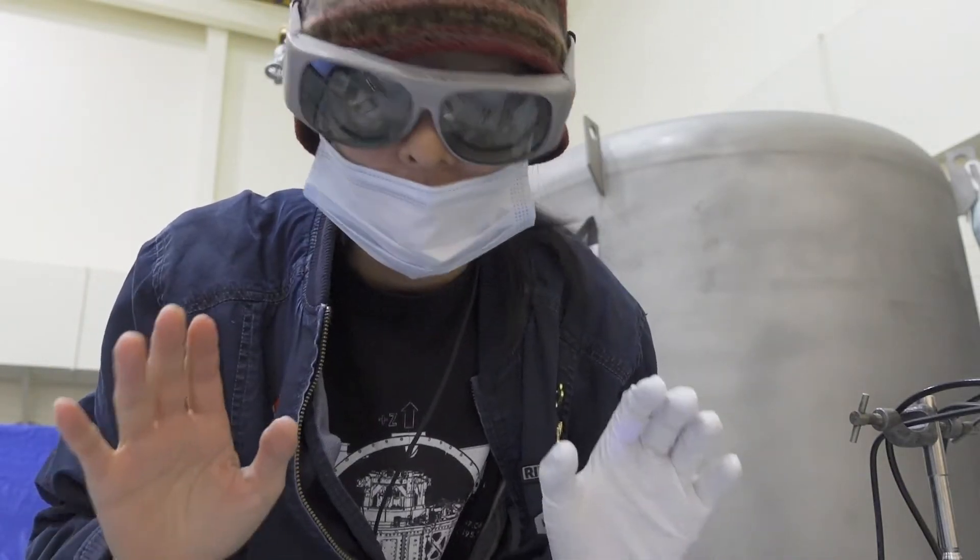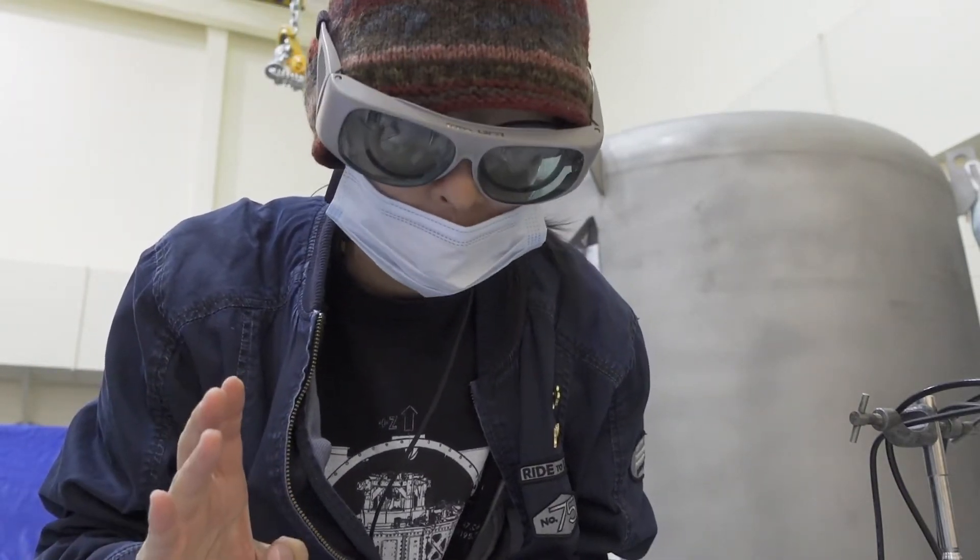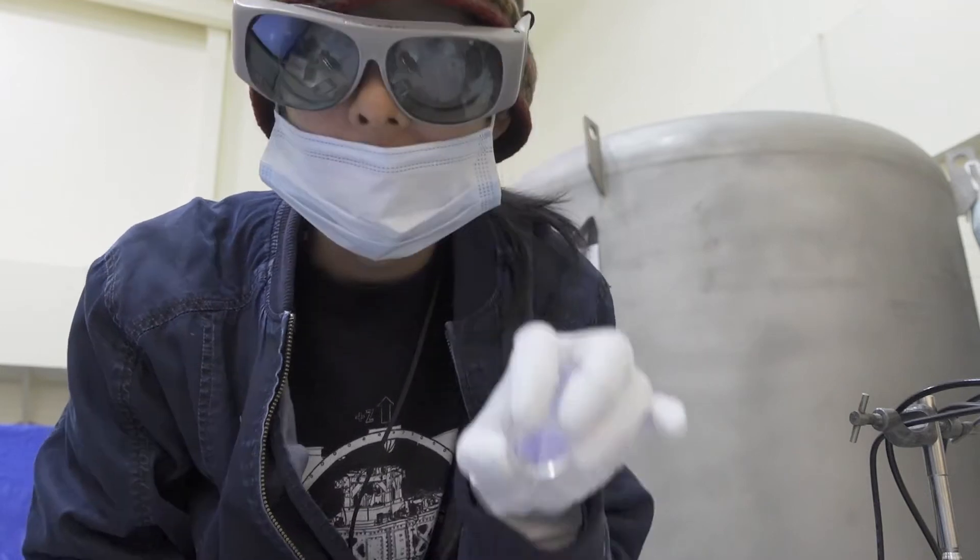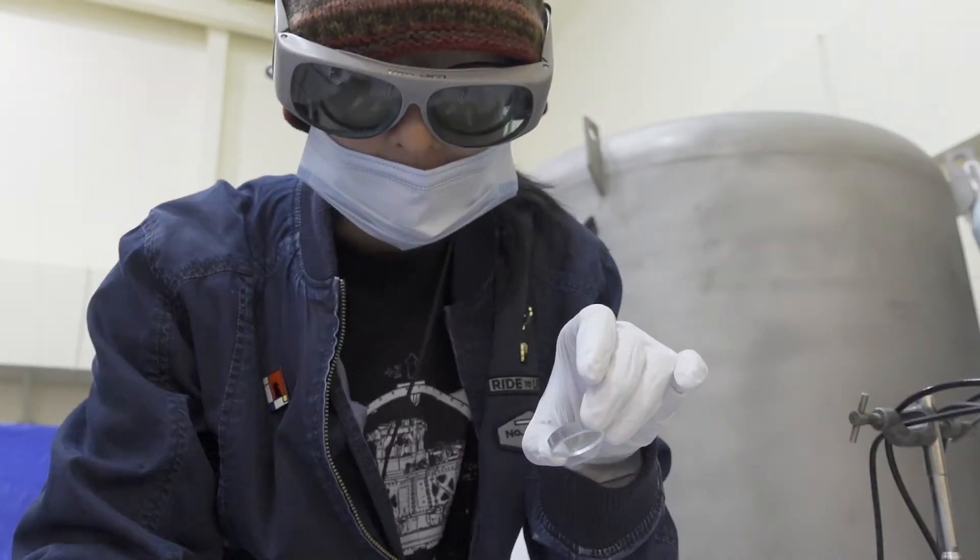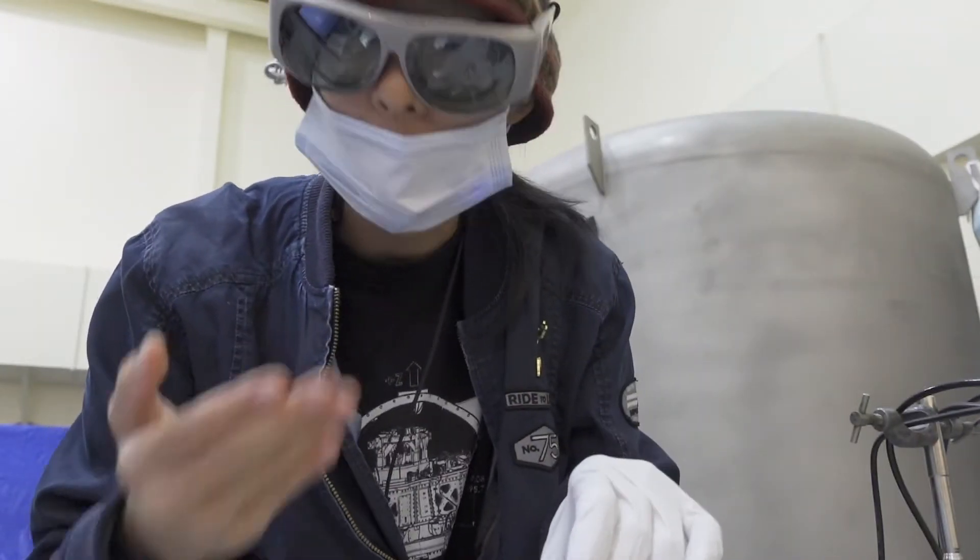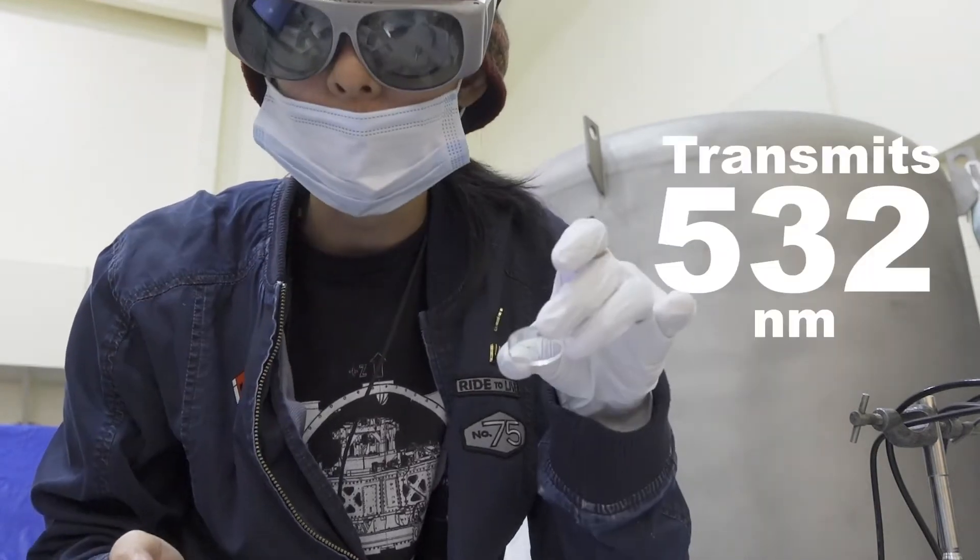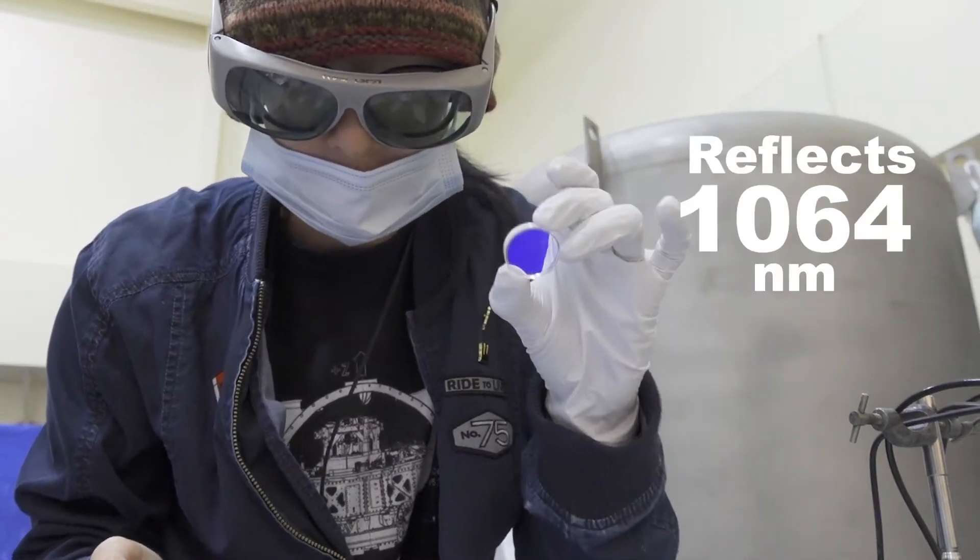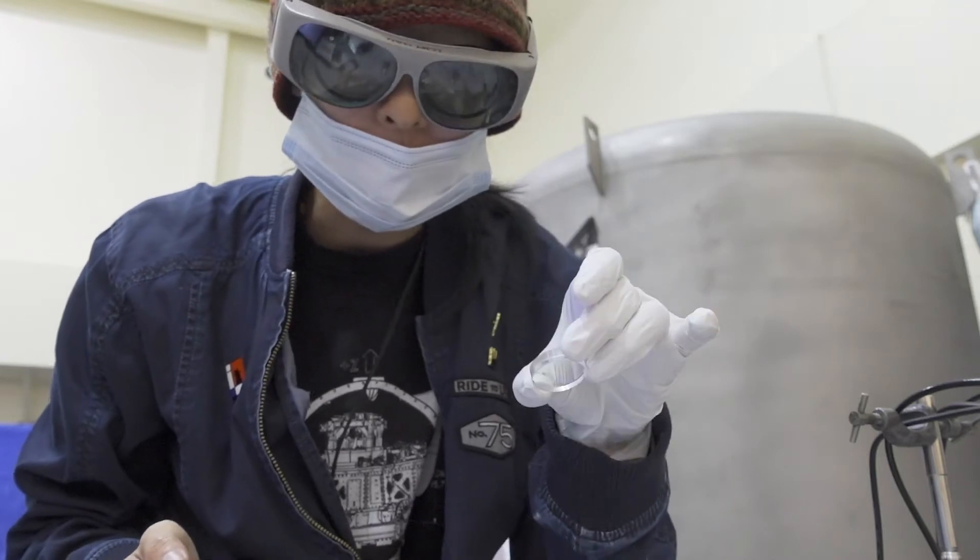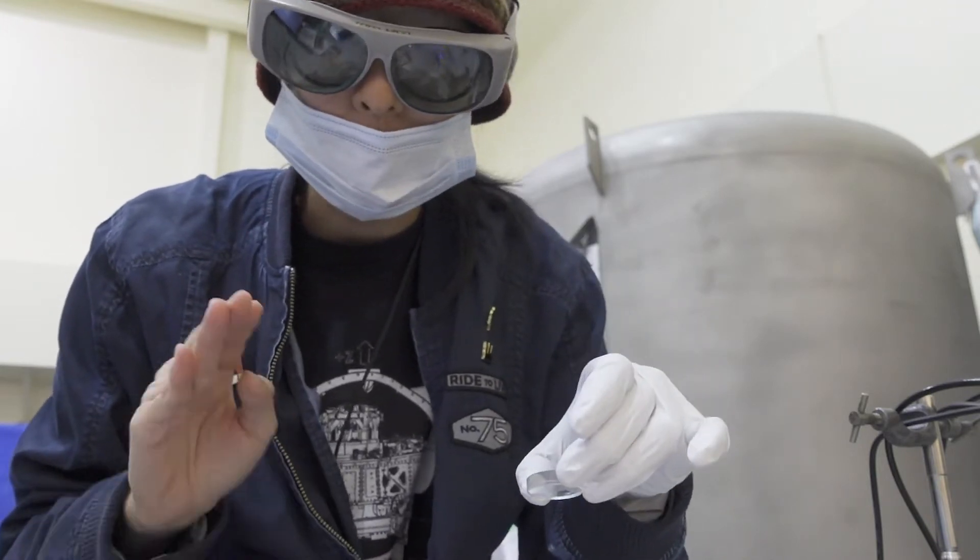Hey, what's up guys, I just ran into a very interesting problem that I think is worth sharing. I have a dichroic optic here and it's really hard to tell which side is supposed to face your IR beam. This one will transmit 532 and reflect 1064, and it's very difficult to tell which side is supposed to be facing the 1064 beam.